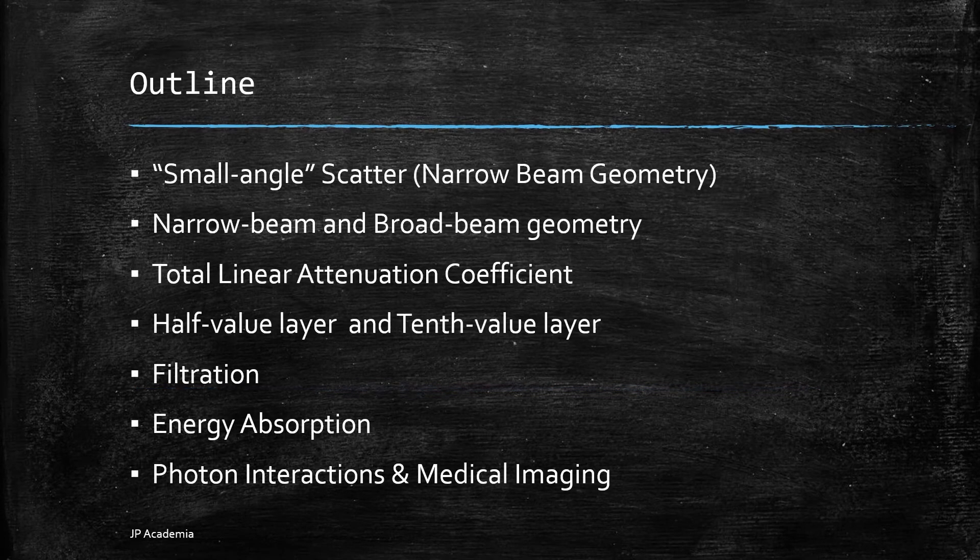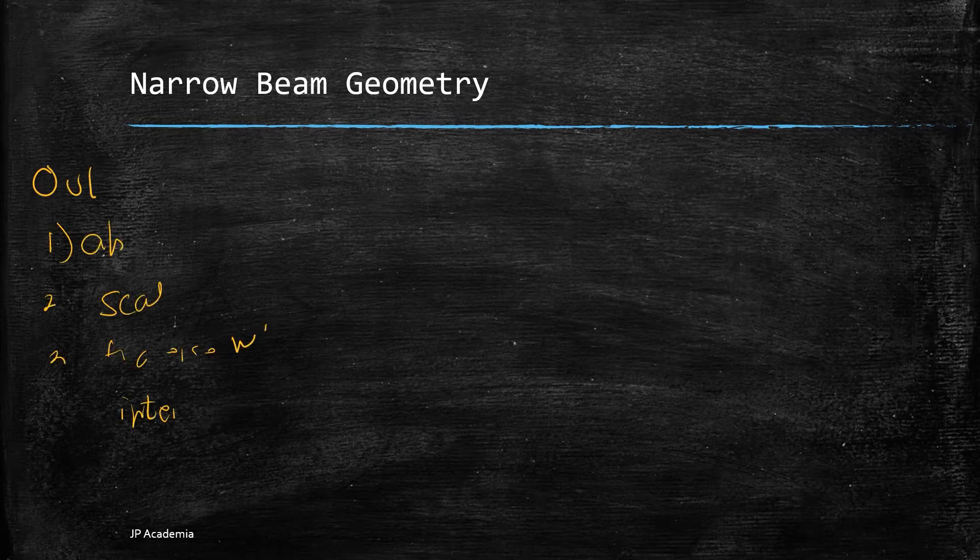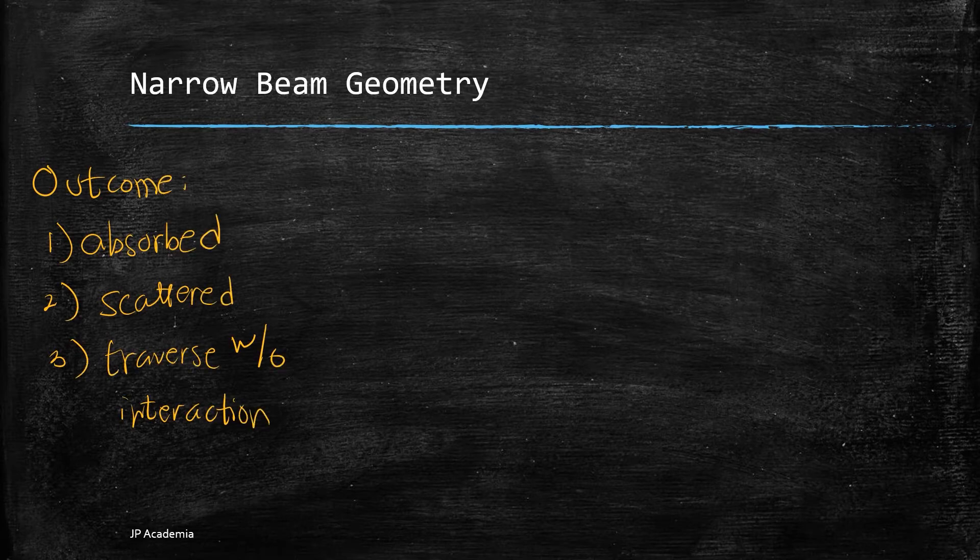And we have the following subtopics for this video lecture. Let's say we have an incoming photon radiation. It can be x-ray or gamma ray. It can lead into three possible outcomes.